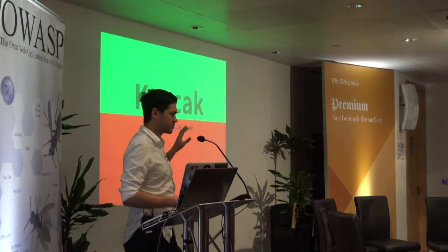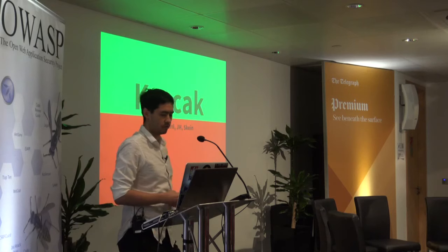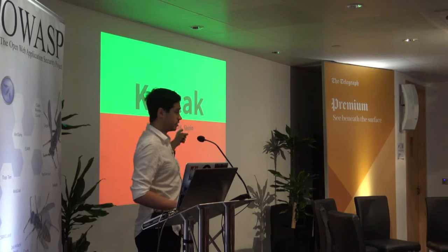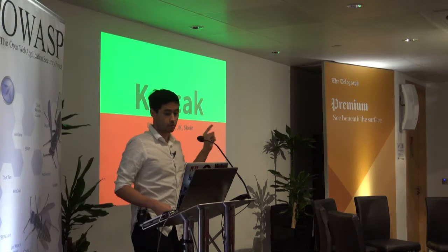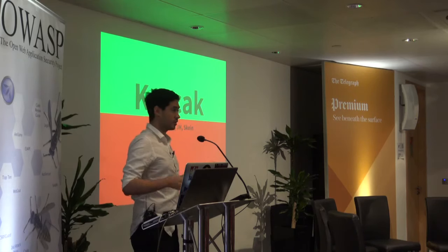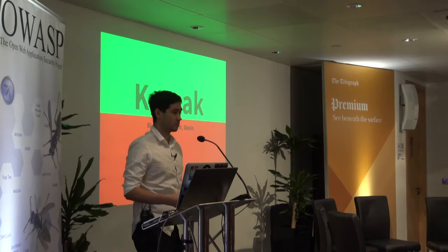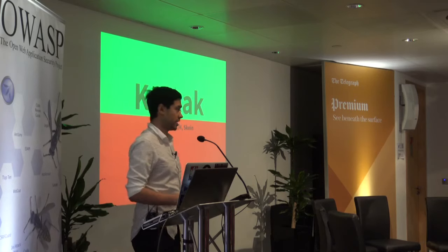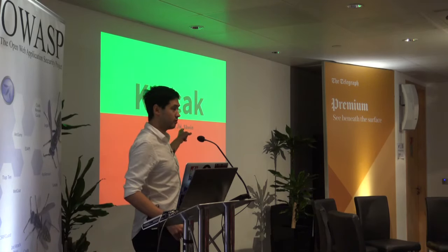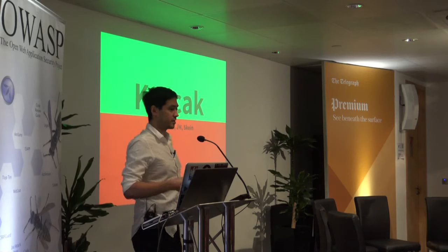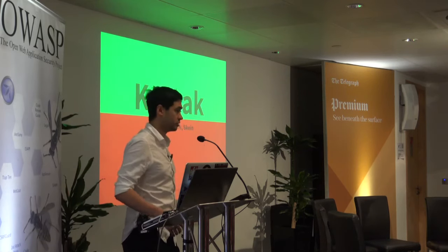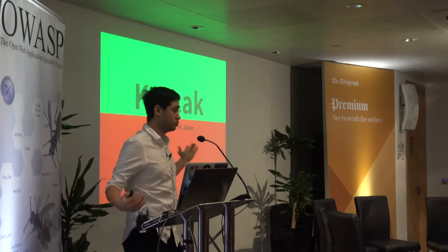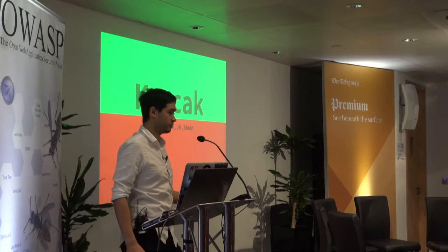Keccak was invented by an Italian-Belgian team. Other candidates in the last round that didn't make the cut were Blake, Russell, Jade, and Sky. It's not that they were insecure — we just had one winner. If you look at Blake, you might have heard of Blake2: it had a second life after the competition. A lot of people have actually used Blake2 instead of waiting for SHA-3.